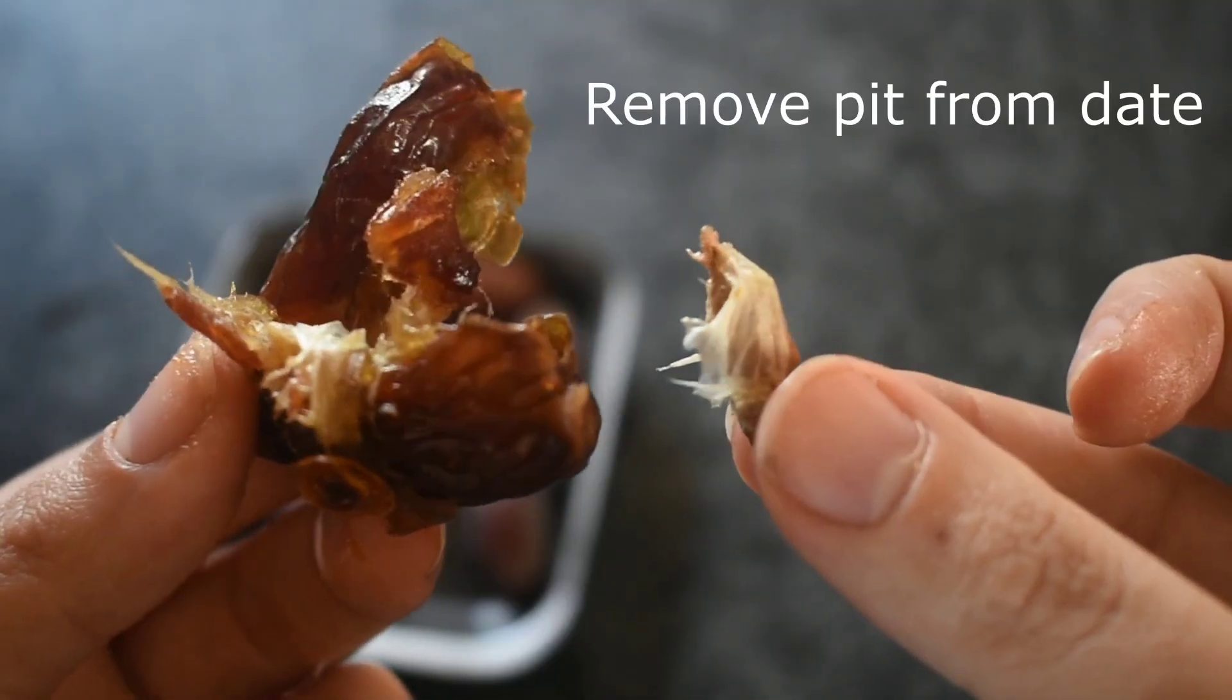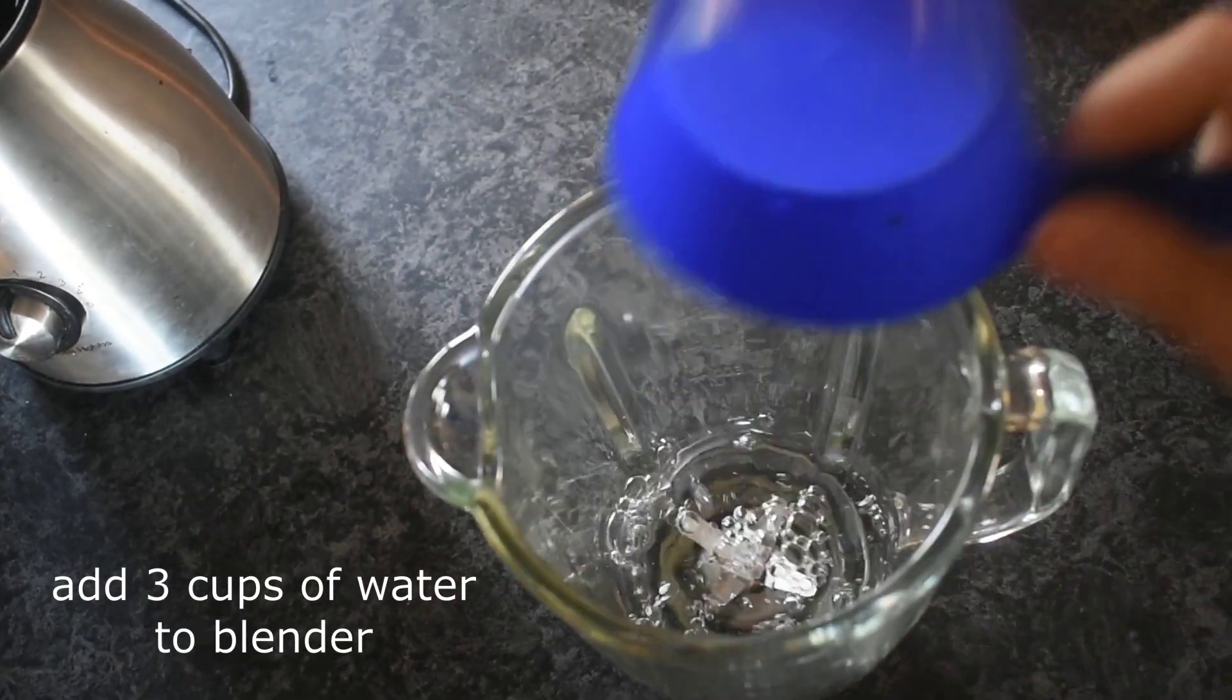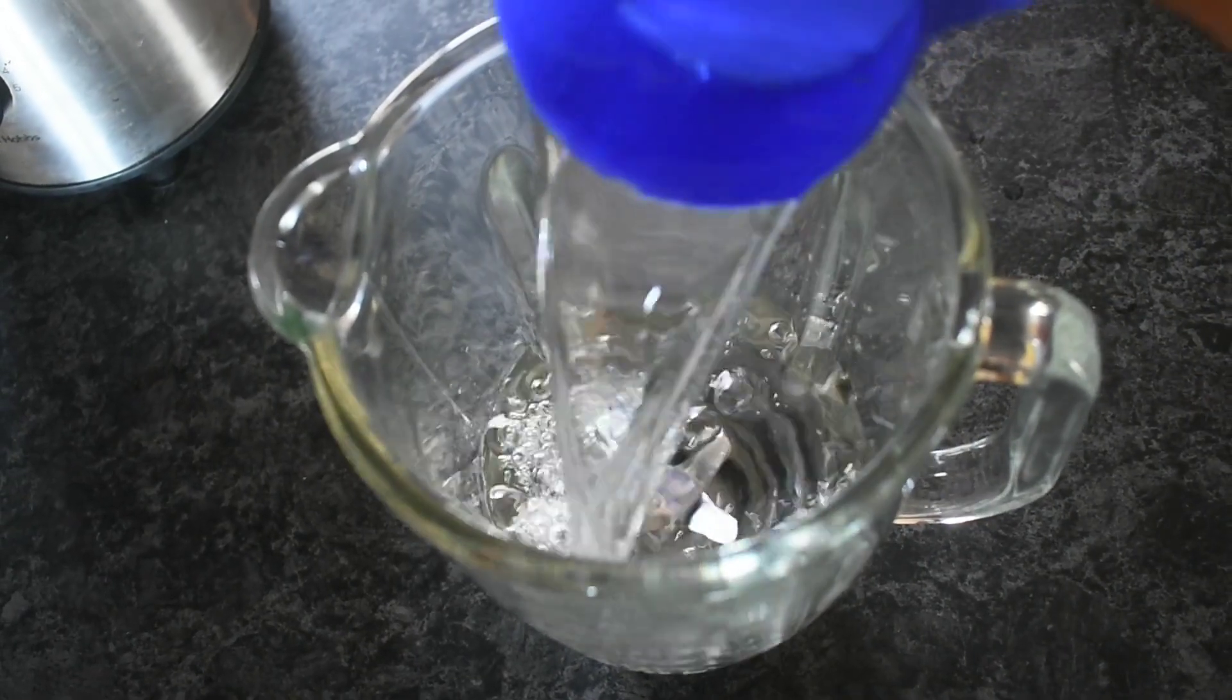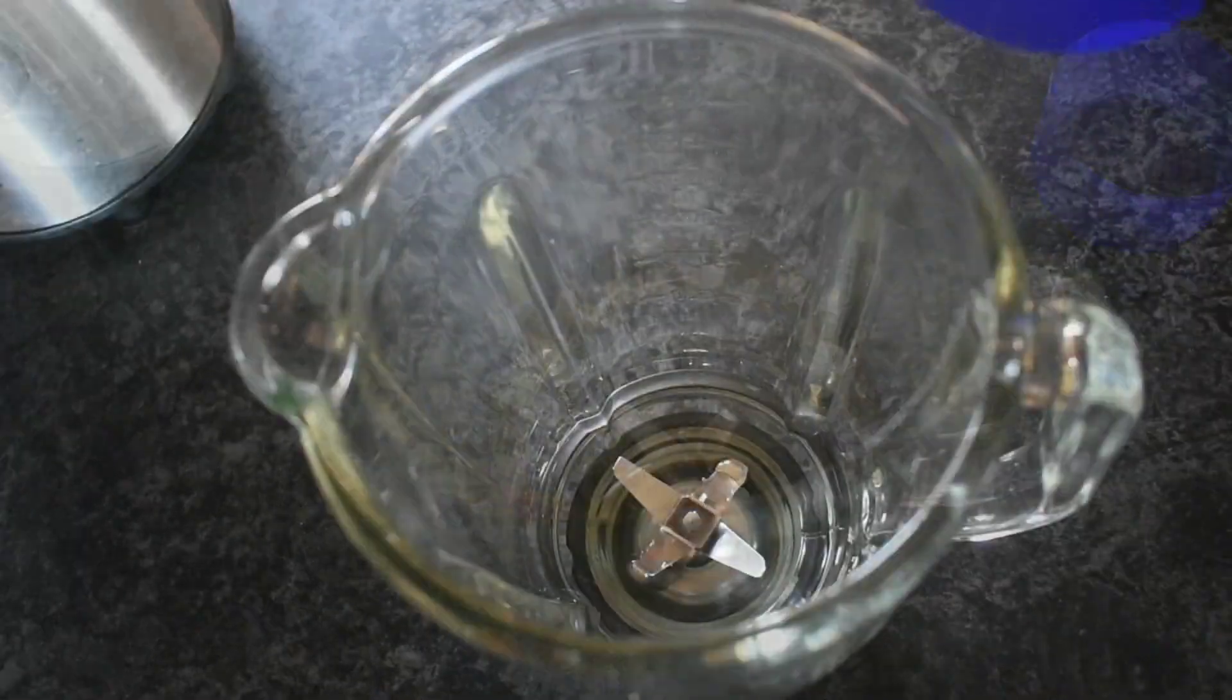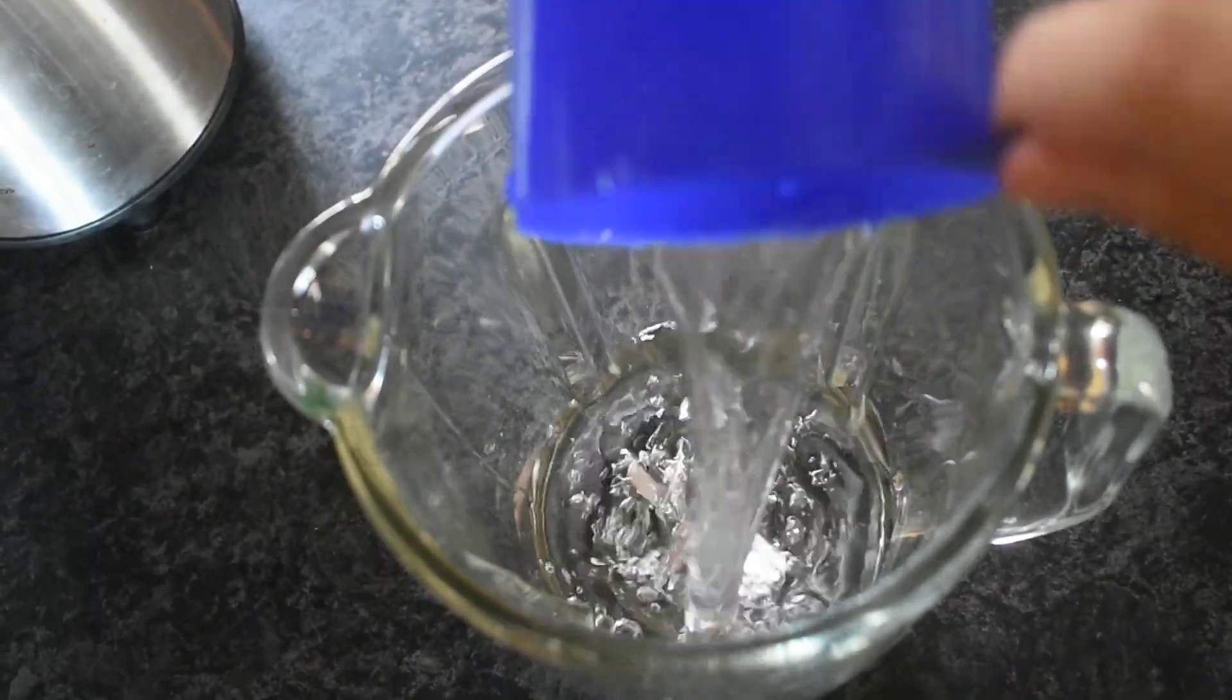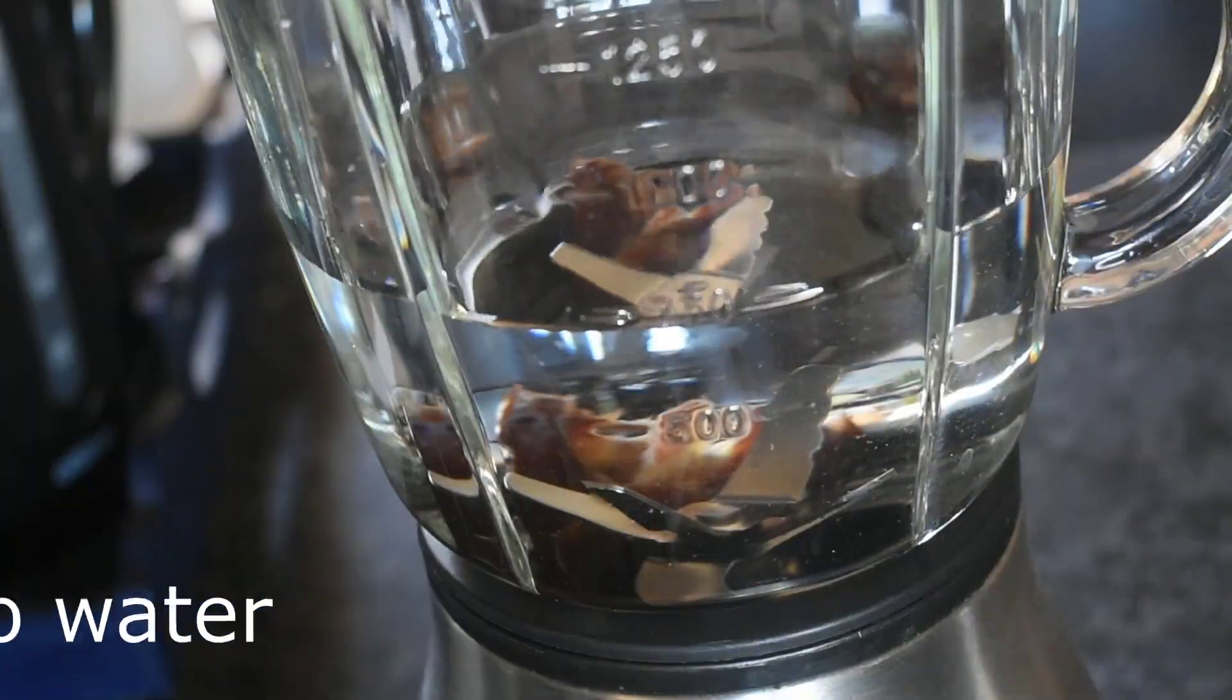Oats are naturally gluten-free but they can be cross-contaminated with gluten during processing. If you need gluten-free milk, make sure to buy oats that say certified gluten-free on the package.